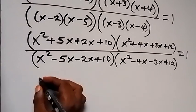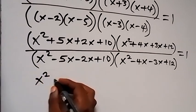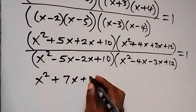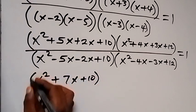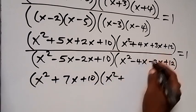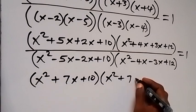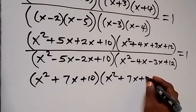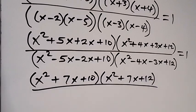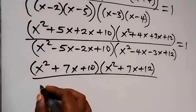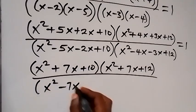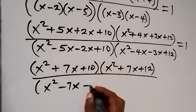Collecting like terms in the numerator: the first bracket gives x² + 7x + 10, and the second bracket gives x² + 7x + 12. In the denominator: the first bracket gives x² − 7x + 10.